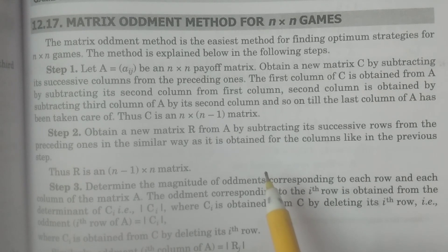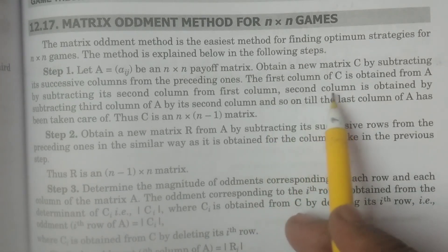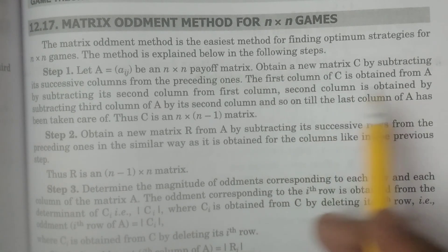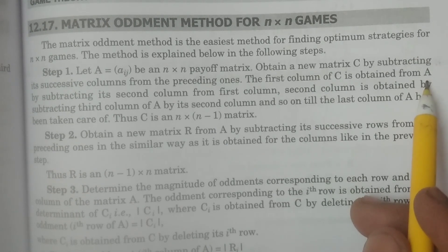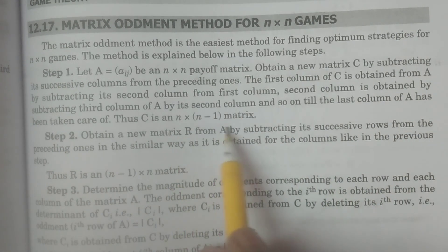One particular column will be reduced. So C is obtained as a column matrix from the elements of A, the given payoff matrix. For example, if there are 3 columns — that is a 3 by 3 matrix — then first column minus second column, second column minus third column; with 3 columns you will get only 2 columns. That is, C is an n by n minus 1 matrix.